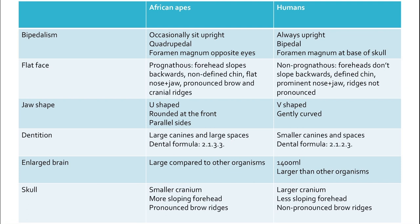For their faces: African apes have a prognathous face, meaning their forehead slopes backwards, with a non-defined chin, flat nose and jaw, and pronounced brow and cranial ridges. Humans are non-prognathous — their foreheads don't slope backwards — they have a defined chin, prominent nose and jaw, and their brow and cranial ridges are not pronounced.